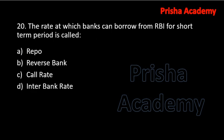Next question: the rate at which banks can borrow from RBI for a short-term period is called — repo, reverse repo, call rate, or interbank rate? The answer is repo. In repo transactions, banks sell securities to RBI at discounted rates and get money. When banks buy securities from RBI and RBI pays interest, that is called reverse repo. Call rate and interbank rates are between commercial banks; RBI is not involved.